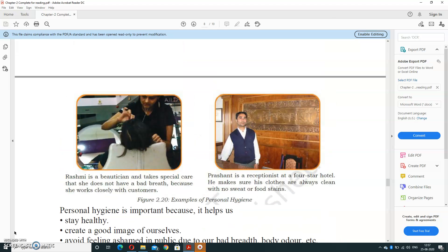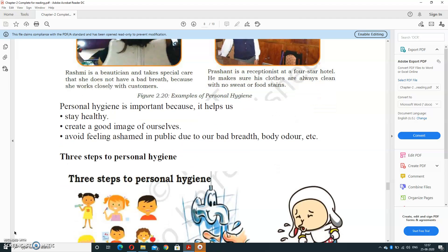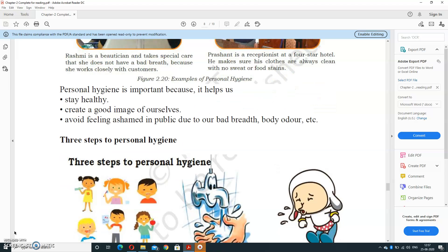For example, Rashmi is a beautician and takes special care that she doesn't have bad breath because she works closely with customers. Prashant is a receptionist at a four-star hotel. He makes sure his clothes are very clean with no sweat and food stains.